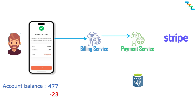If the payment API service is not idempotent, then the payment service again deducts the money from the user bank account. If the payment service is idempotent, then the service understands this request is already processed and sends the success response to the billing service, without again deducting money from the user account.